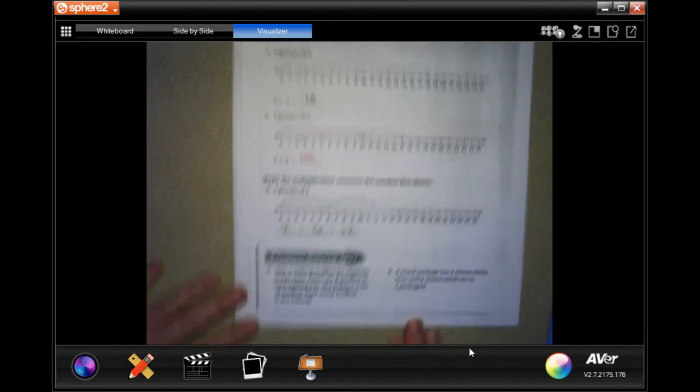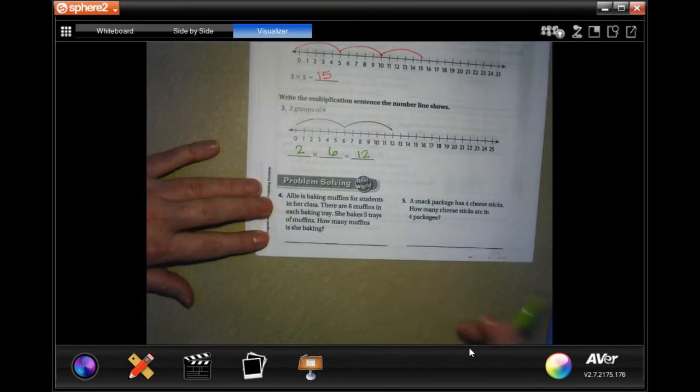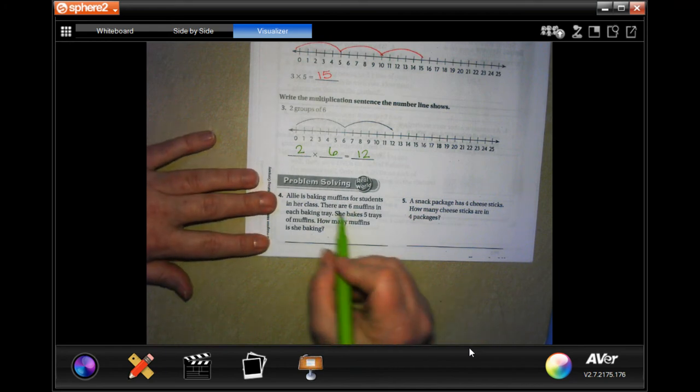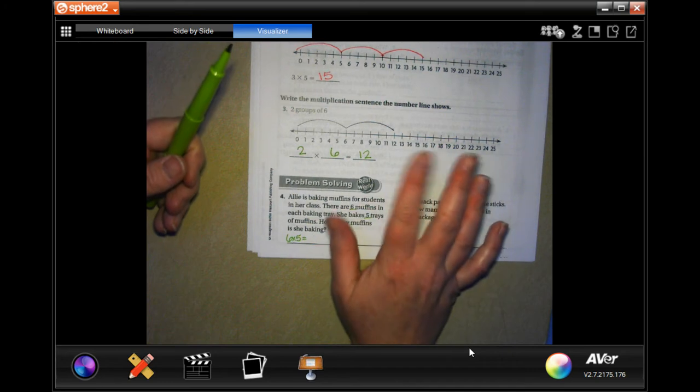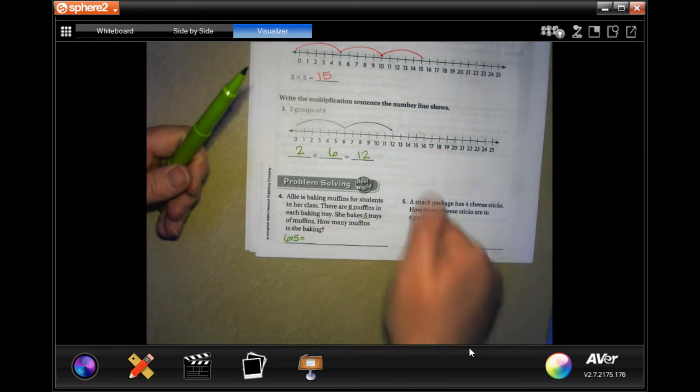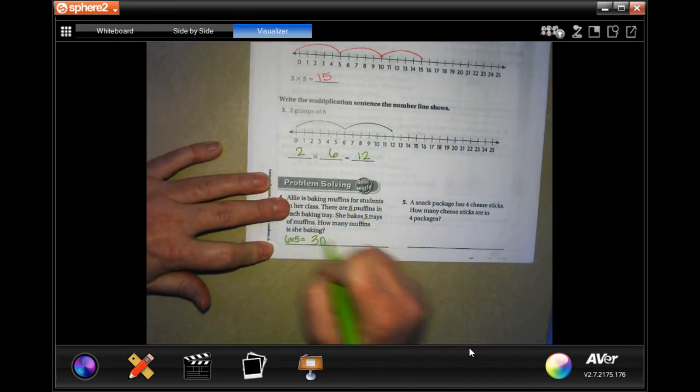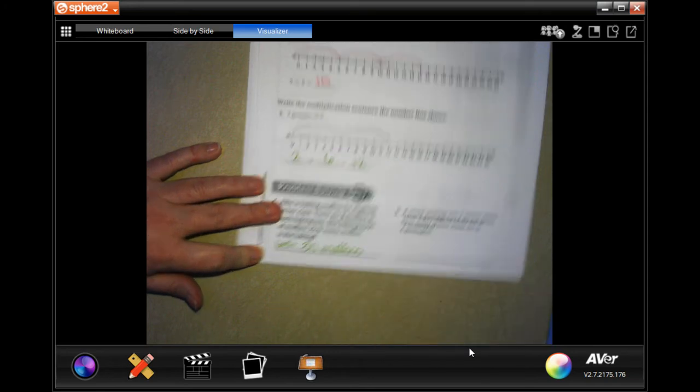All right, we're going to go down and do the very bottom. It says Allie's baking muffins for students in her class, six muffins in each baking tray. She bakes five trays, so six times five. We'll count by five six times, so five, ten, fifteen, twenty, twenty-five, thirty. Thirty muffins.